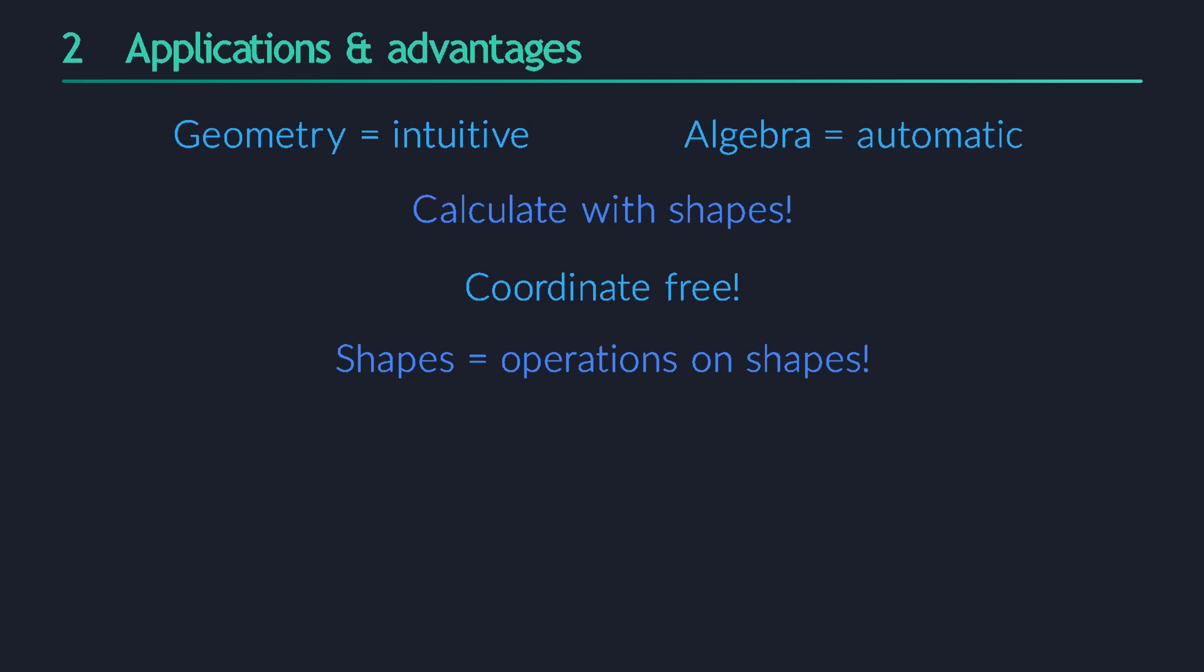But the main advantage, for me at least, is that geometric algebra unifies and clarifies so many things. The cross product is an excellent example. This is one of the weirdest inventions of vector calculus, and we will discover a much better alternative.